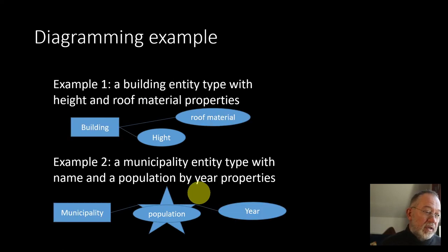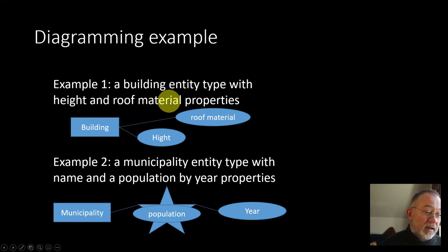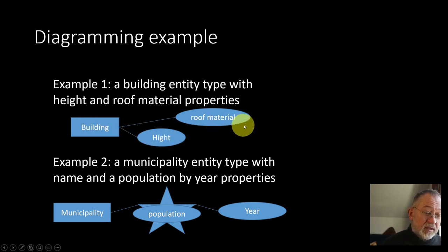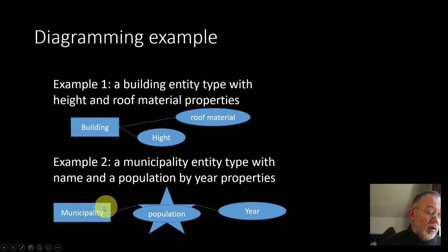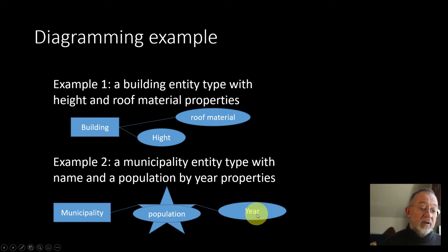Looking at some examples: we could have a building with a height and a roof material — so we have a building entity with a height property and a roof material property. Or we could have a municipality entity with population stored for each year.